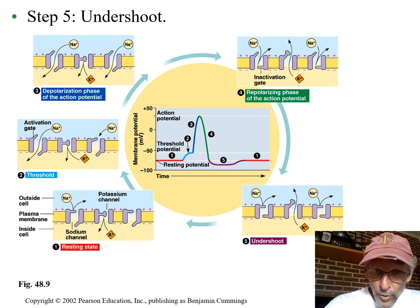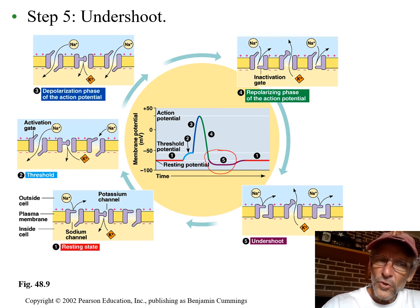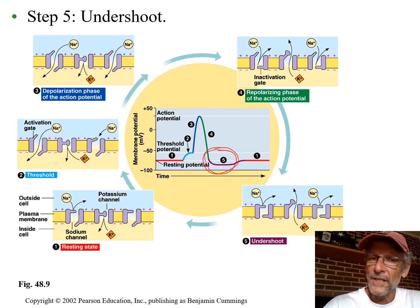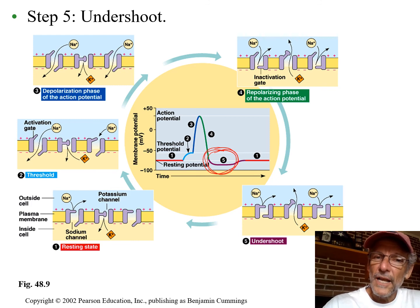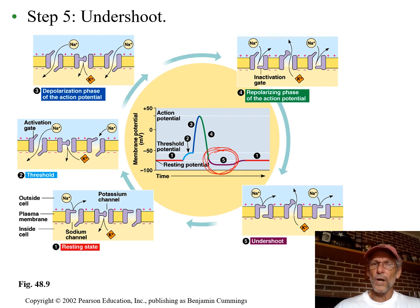Now look at this part in purple — label number five — called the undershoot. Why undershoot? Because the line went under the resting potential for a very brief moment. Now the cell is even more negative inside compared to outside, meaning it's even further away from firing again. During the undershoot, the cell can't fire again, and that's an important part of this story.